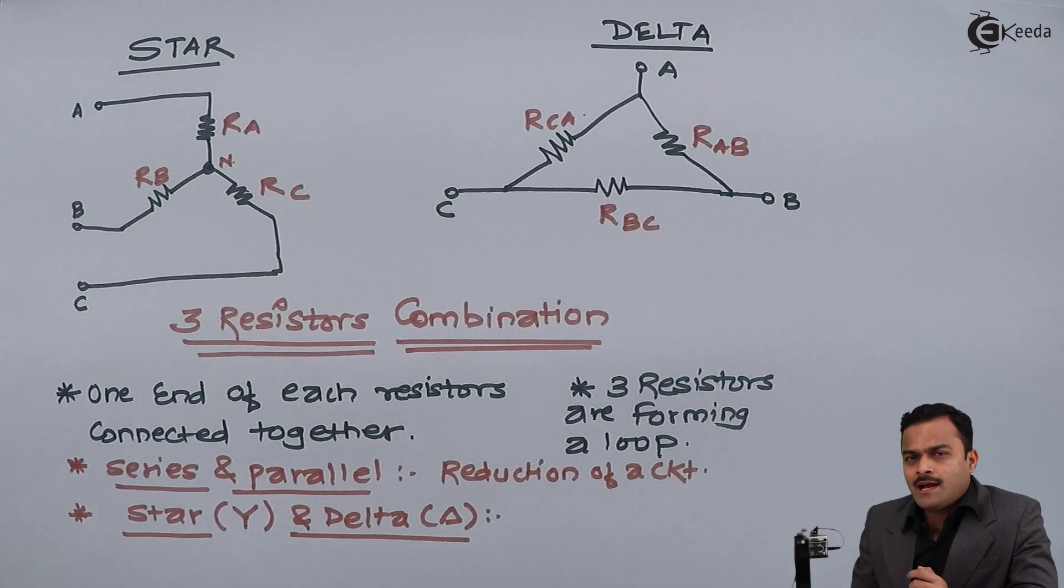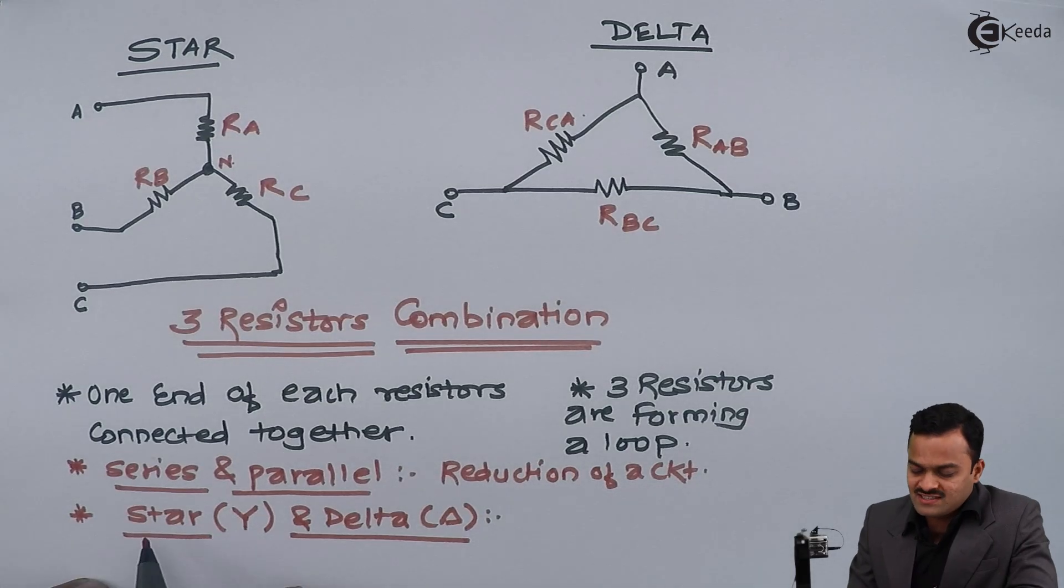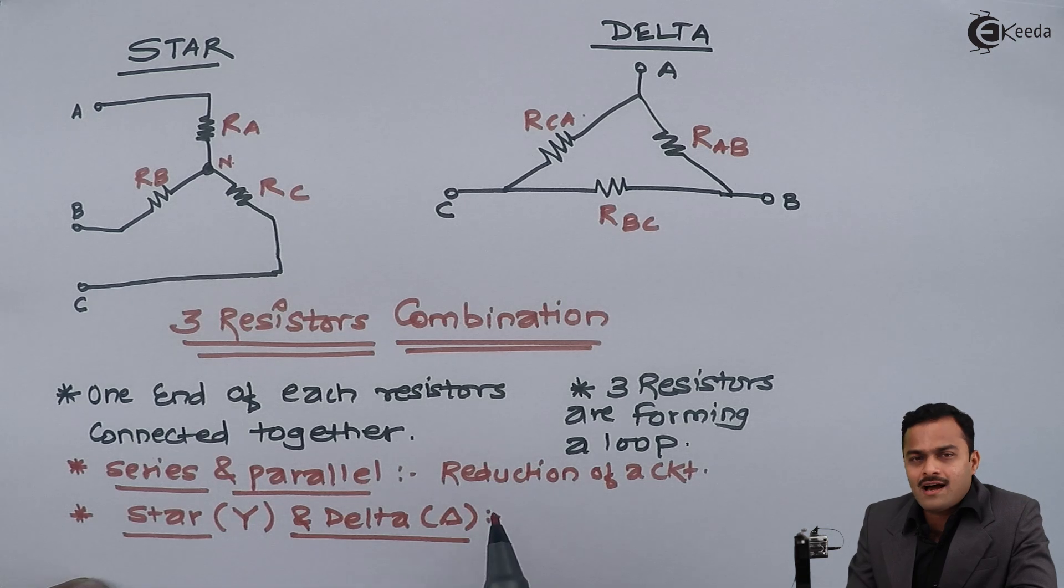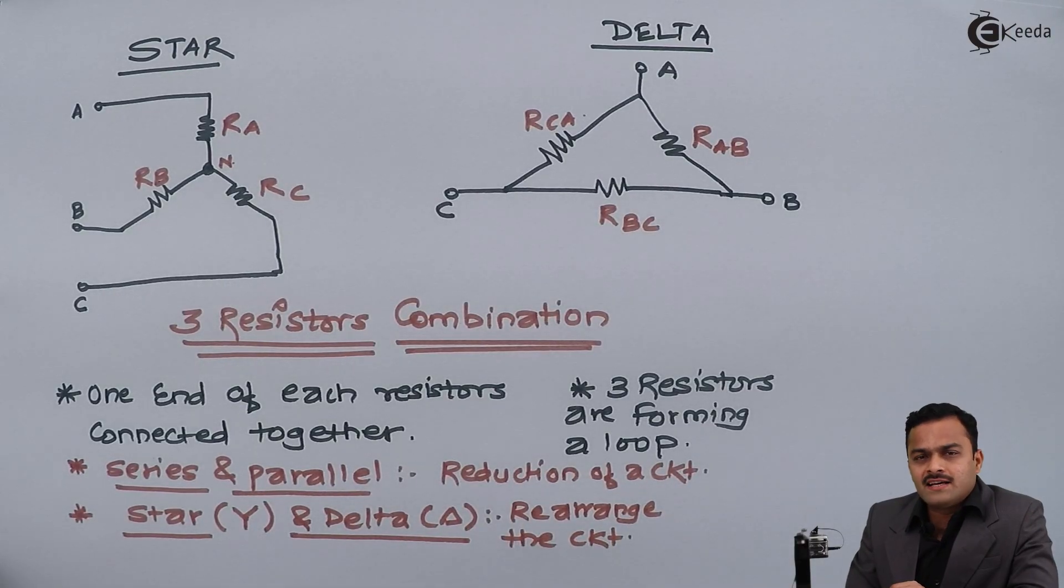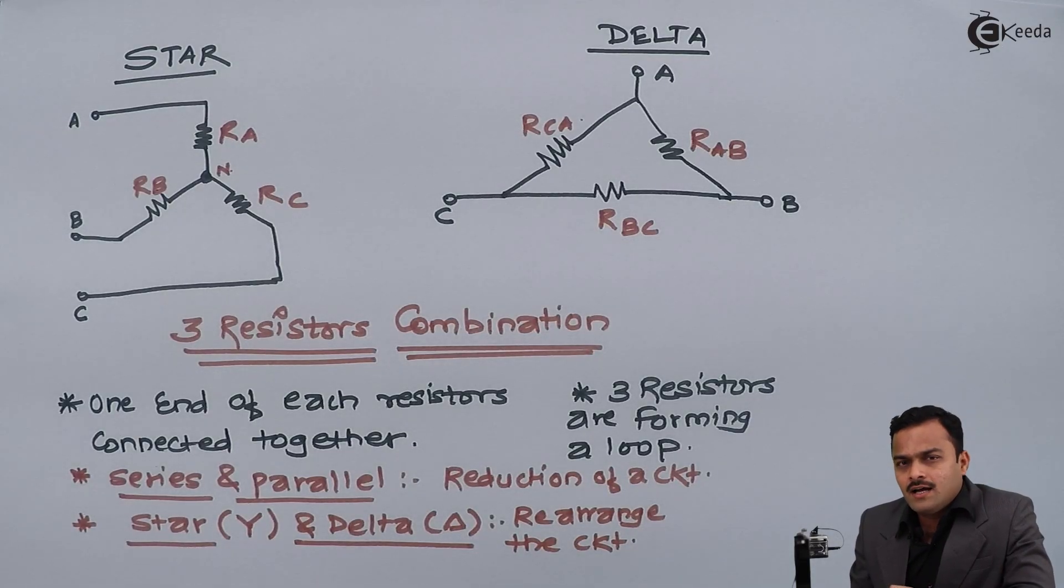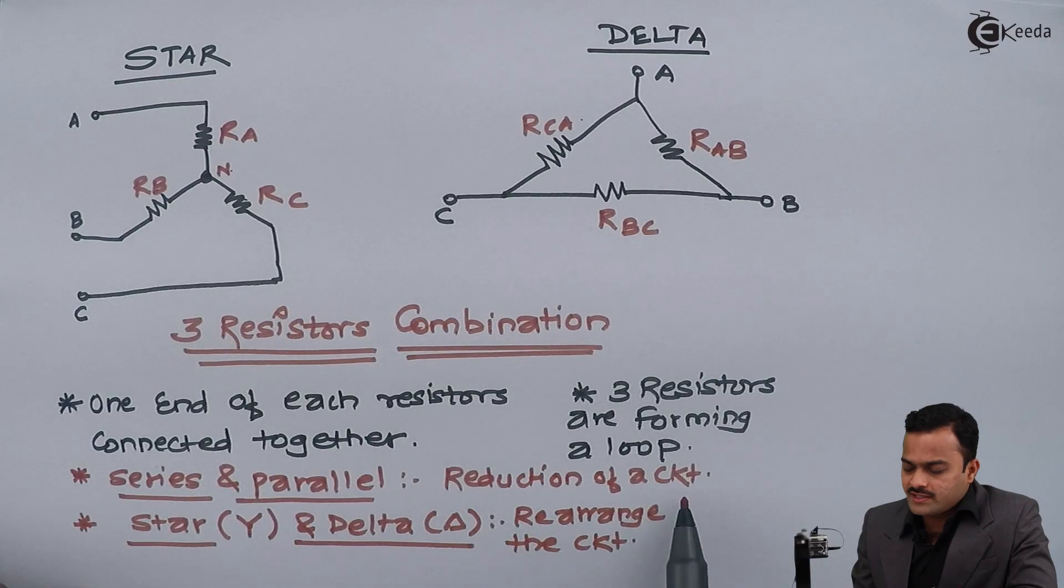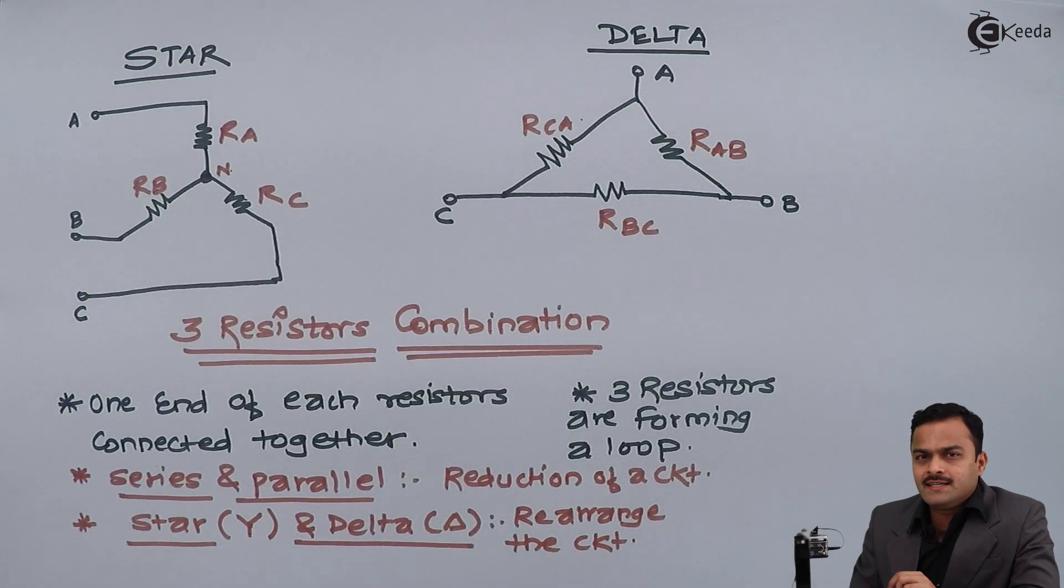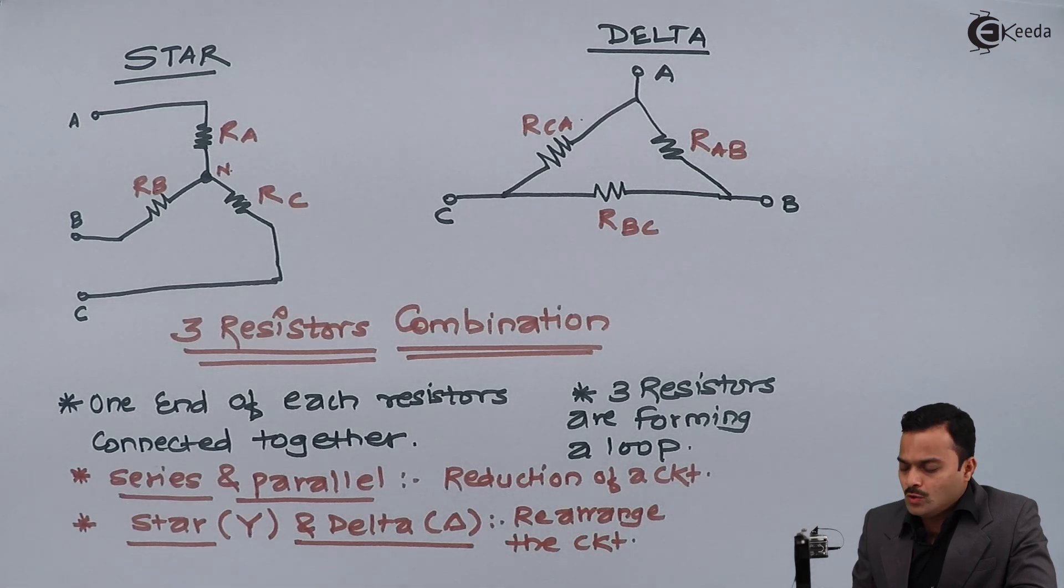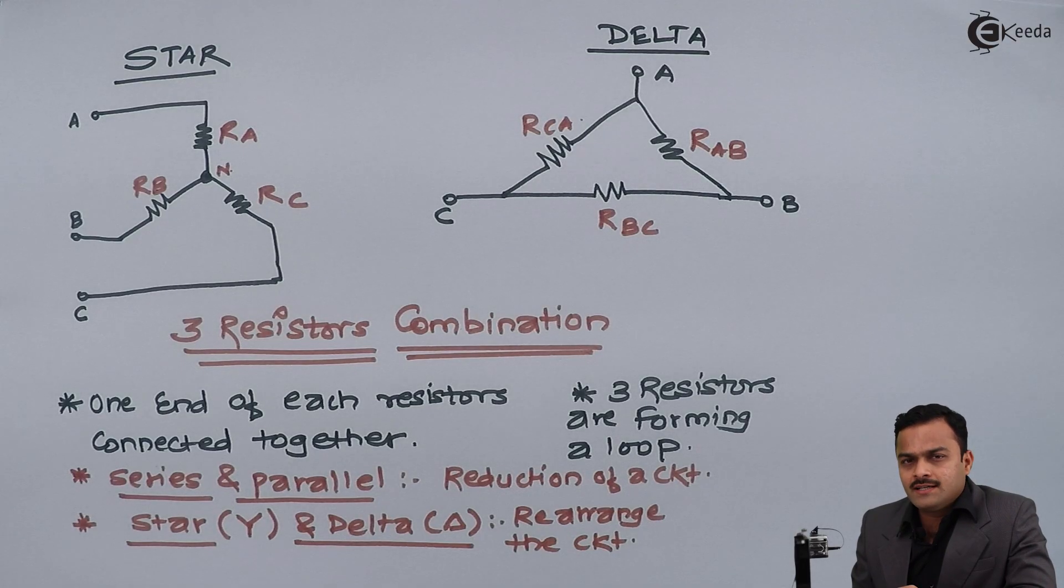But as I said earlier, sometimes it is not possible to figure out how many series and parallel connections are given. But a slight change in the circuit you may get number of series and parallel connections, hence ultimately you can reduce your circuit into one equivalent resistance between points of interest. So we will see how we are going to use the star and delta in order to rearrange the circuit, which eventually leads into series and parallel connections in order to get a reduced circuit between points of interest.